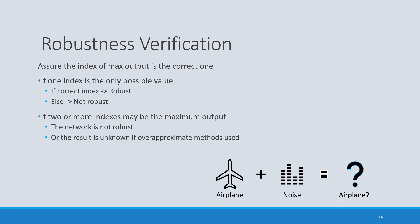Here is an example. Suppose we have an image of an airplane, apply some noise, and verify that the image will still be classified as an airplane. By computing the output set of the neural network, we get 10 output intervals corresponding to each class. We look at the maximum output interval and check its index — if it is the correct index, we can say the network is robust. If two or more indices may be the maximum and we used over-approximate methods, and one of them is the correct label, the result is reported as unknown. Otherwise, the network is not robust.